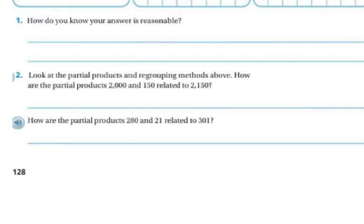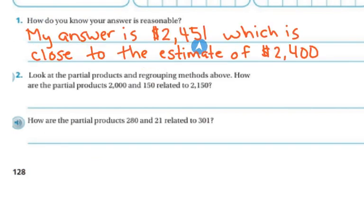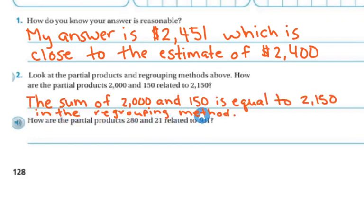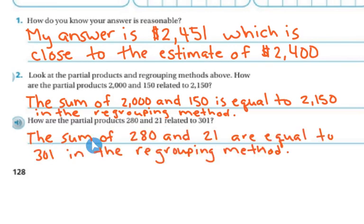So how do you know your answer is reasonable? Well, my answer is 2,451, which is close to the estimate that we had at 2,400. Next, let's look at the partial products and regrouping methods above. How are the partial products 2,150 related to 2,150? The sum of 2,150 is equal to 2,150 in the regrouping model. How are the partial products 280 and 21 related to 301? Well, the sum of 280 and 21 are equal to 301 in the regrouping method. So 280 plus 21 is 301.